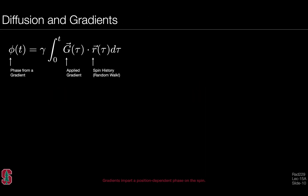Let's recall how phase is imparted on a spin. Gradients are applied as functions of time, and the gradient activity dotted with the spin's position — or its random walk history — gives rise to a particular phase for that spin. There is a clear dependence of the stored phase on the underlying spin history, which we don't control, but also on the gradient waveforms, which we do control. We can design gradient waveforms to impart more or less phase onto the spin system depending on whether spins are undergoing a random walk.